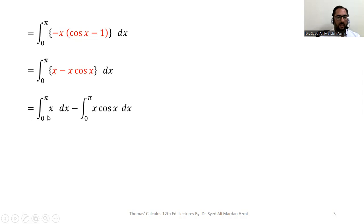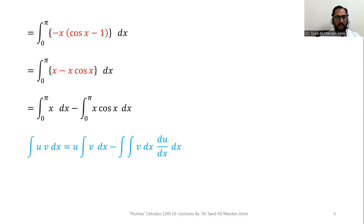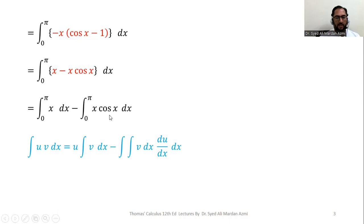The first integral from 0 to pi of x dx can be integrated easily with the power formula. For the second integral we need to apply integration by parts. The formula for integration by parts is: if u and v are functions of x, then the formula is u times integral of v minus double integral of v dx times the derivative of u with respect to x dx. We select u as a function whose derivative is possible and v as a function whose integration is possible.